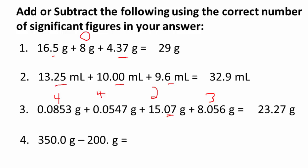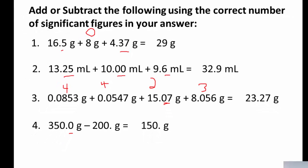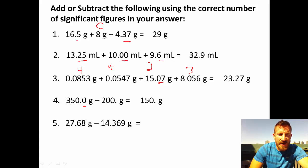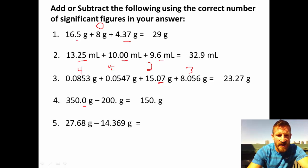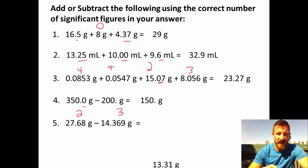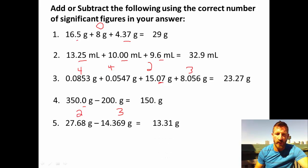Next: 350.0 minus 100. The number 350.0 has 1 place to the right of the decimal, but 100 has 0 places. So we write the answer as 250. with a decimal point to indicate 0 places to the right. Last subtraction problem: 27.68 minus 14.369. The first number has 2 places and the second has 3 places to the right of the decimal, so we keep 2 places. The answer is 13.31 grams.